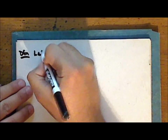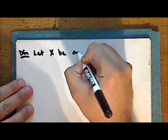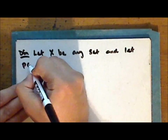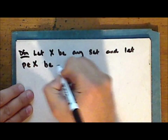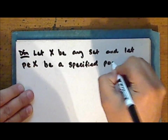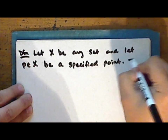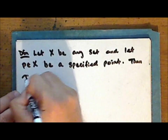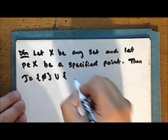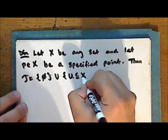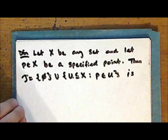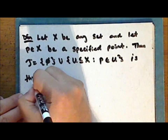New definition: let X be any set, and let the point P in the set X be a specified point. Then the collection tau, consisting of the union of the set which contains the empty set with the set of all subsets of the set X such that the point P is in that subset, is the particular point topology.